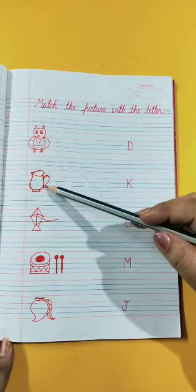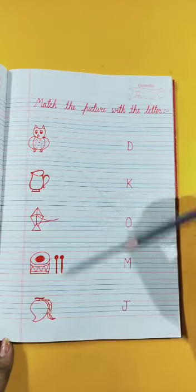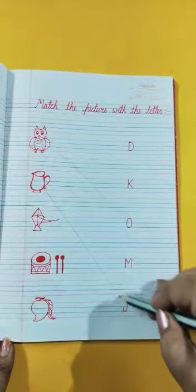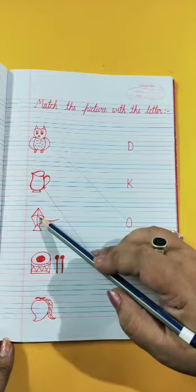Second, Jug. Jug starts with the letter J. So we have to match Jug with the letter J. Next is Kite.